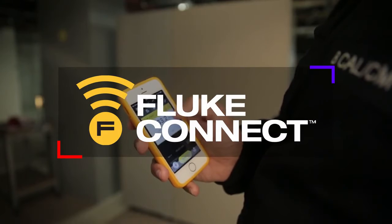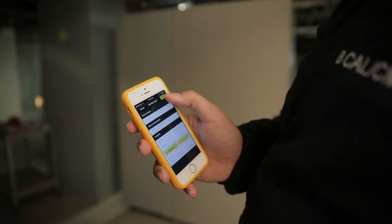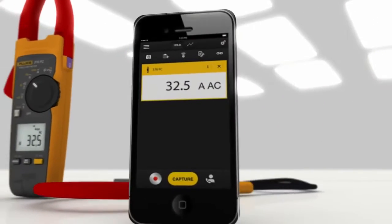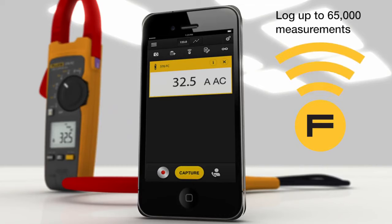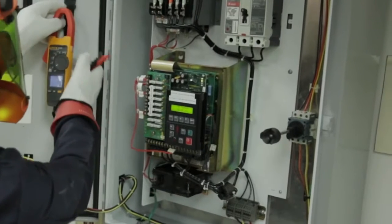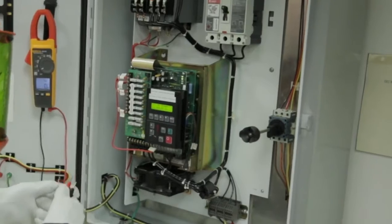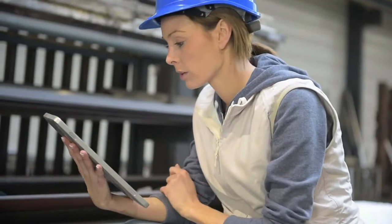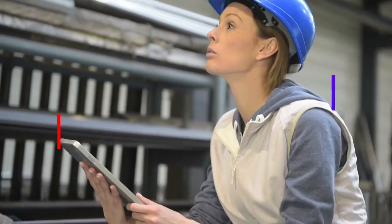For example, Fluke Connect is an app that can communicate with compatible Fluke handheld testers. A tester can send measurement results to the phone or tablet a safe distance away. Trend analysis can be made and results shared with other team members via the cloud to figure out what the problem is and what needs to happen to get things fixed quickly.